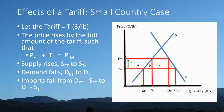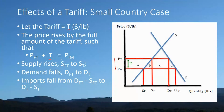Here are the effects of a tariff — the small country case. Let the tariff equal T dollars per pound, measured along the vertical axis. If you put a tax of, say, a dollar per pound on a pound of coffee, the tariff is actually going to raise up the domestic price by the full amount of the tariff.